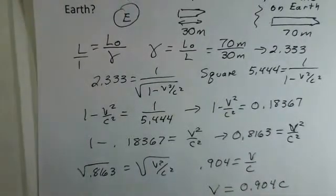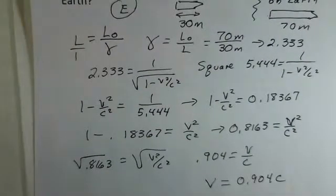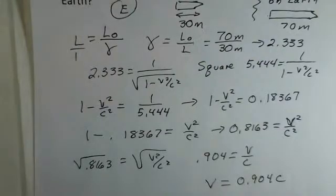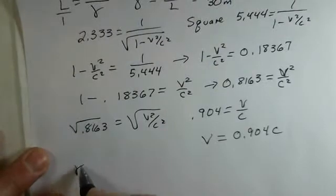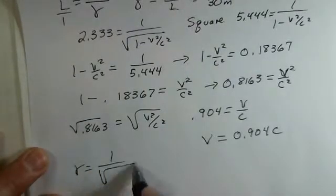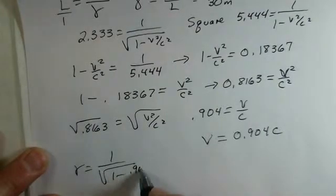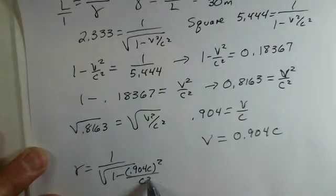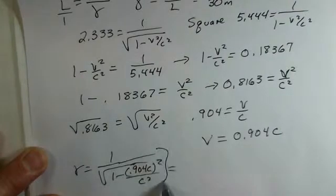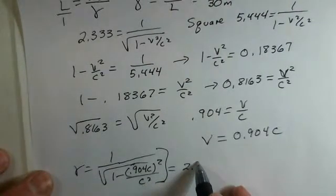To double check, if you calculate the gamma: 1 over square root of 1 minus—our v is 0.904c—we have to square that in calculating gamma, and we divide by c². You have to double check that, and this whole result gives us a gamma of 2.339.